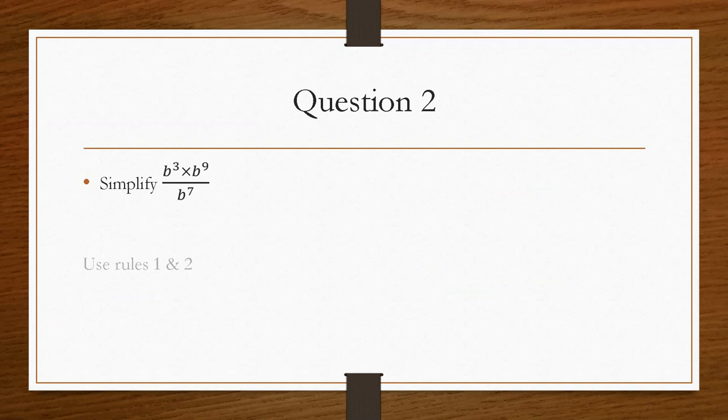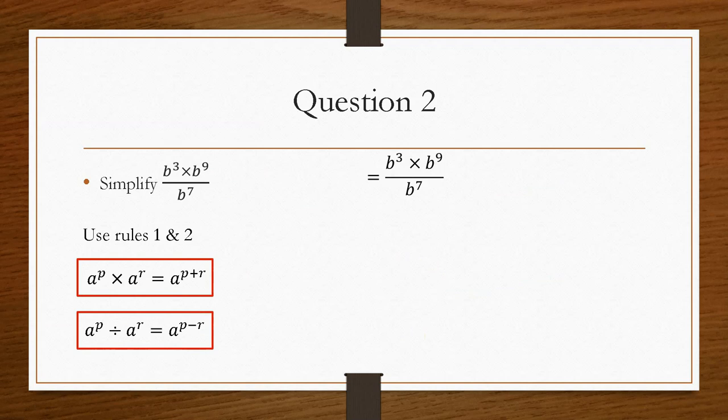Question number 2 will use a combination of rules 1 and 2. Now, there are multiple ways that you could do this. But the easiest way is to combine the top line into a single variable. So we have to use rule 1 to begin with, because we have times in the indices, so we have to add them.